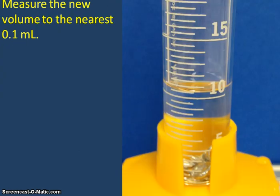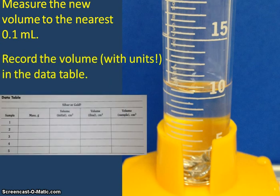You will measure this new volume to the nearest tenth of a mL and record this volume with units in the data table in the spot indicated by the yellow arrow. This is the final volume for sample number one. It does not actually equal the volume of the sample itself.